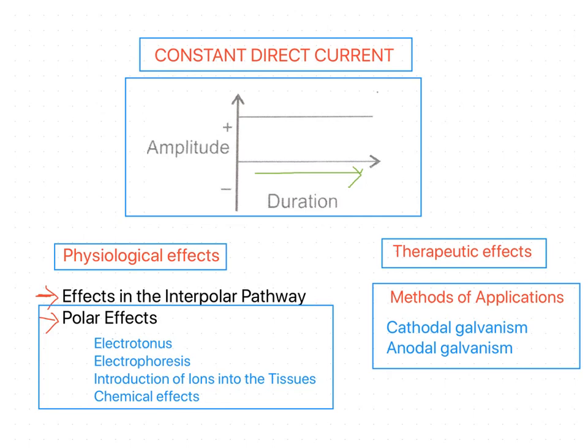The resistance of the underlying tissues is much less than that of the skin, so the current spreads considerably once it has passed through the skin. The current density and therefore the effects are much greater in the superficial than in the deep tissues. The physiological effects of constant direct current are due to the two-way migration of ions and may be divided into two groups: effects in the interpolar pathway and the effects produced at the poles, which are called polar effects. Polar effects consist of four types: electrotonus, electrophoresis, introduction of ions into the tissues, and chemical effects.